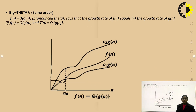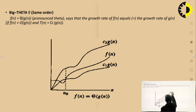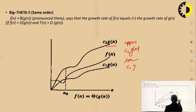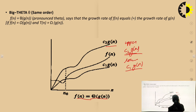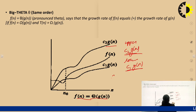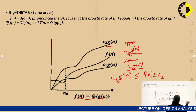Big Theta means we have both an upper bound and a lower bound. If the upper bound is c₂·g(n) and the lower bound is c₁·g(n), then our function exists between them. The Theta notation states: f(n) = Θ(g(n)) if c₁·g(n) ≤ f(n) ≤ c₂·g(n). This is the Theta notation.